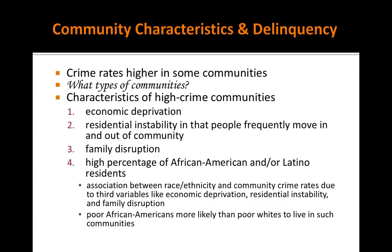The association between race, ethnicity, and community crime rates is due to third variables — things like economic deprivation, residential instability, and family disruptions. Poor Black residents are more likely than poor white residents to live in these types of communities, so it's not really a function of race and ethnicity.